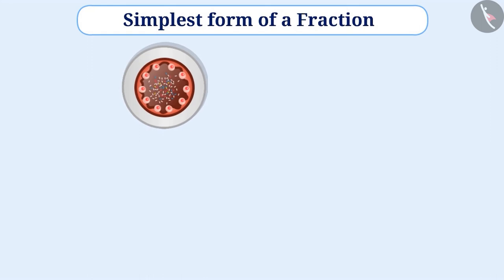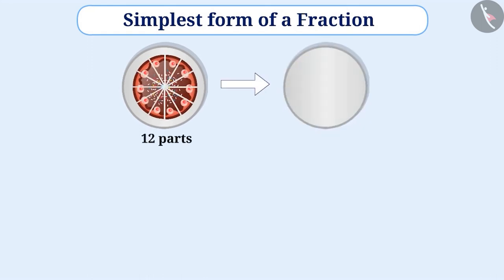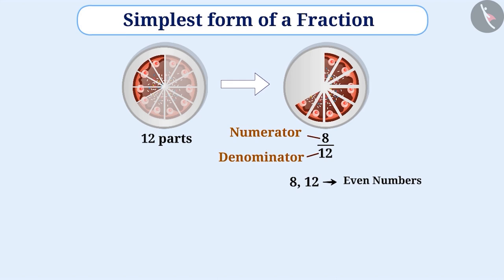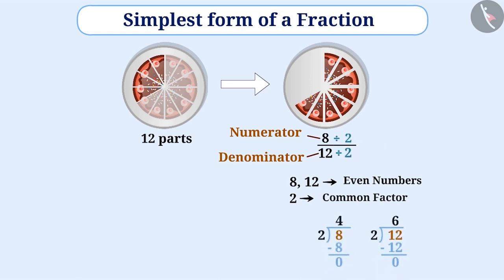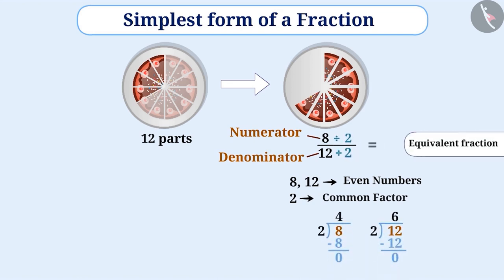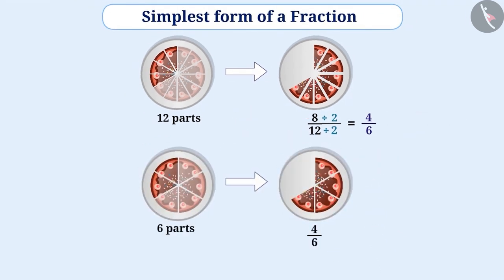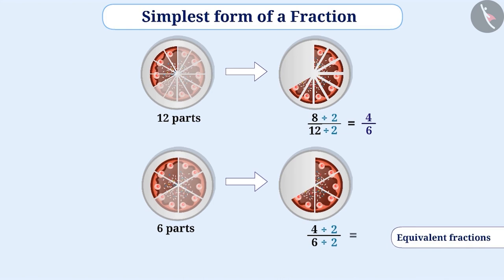Now let's understand what is the simplest form of a fraction. Suppose there is a cake and we have to divide it into 12 equal parts. If we take out 8 parts from it, then the fraction represented by the parts taken is written as 8 by 12. Here, the numerator is 8 and the denominator is 12. Since both numbers are even, 2 is the common factor of these two numbers. If we divide 8 and 12 by 2, then we will get the equivalent fraction of 8 by 12 as 4 by 6. 2 is the common factor of both 4 and 6, so this can also be divided by 2, resulting in an equivalent fraction of 2 by 3.